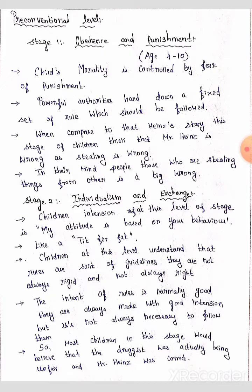The pre-conventional level depends fully on the age between 4 to 10 years. Child morality is controlled by fear of punishment, and powerful authorities hand down a fixed set of rules which should be followed.